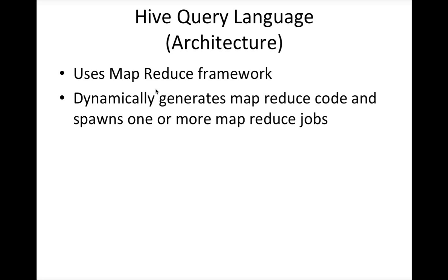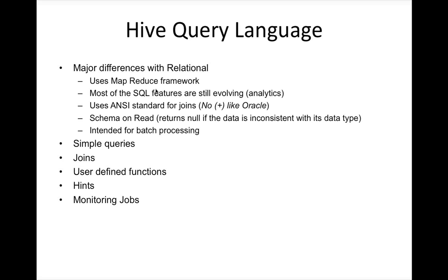Going back to the presentation — the architecture of HiveQL. We will now talk about major differences compared to relational databases, which have their own proprietary query engines. Hive is a MapReduce framework, and most of the SQL features are still evolving — especially windowing functions or analytics. You need to spend a lot of time understanding the syntax and subtle differences between analytics functions or windowing functions in traditional databases versus Hive. It uses ANSI standard for joins. In older versions of Oracle, people used to use the plus sign for left outer join — even now it is supported — but even in relational databases, people are moving toward ANSI standard for joins. You need to use only ANSI standard for joins in Hive.